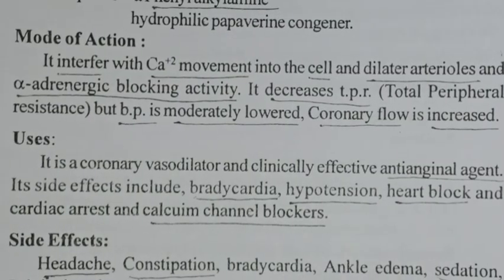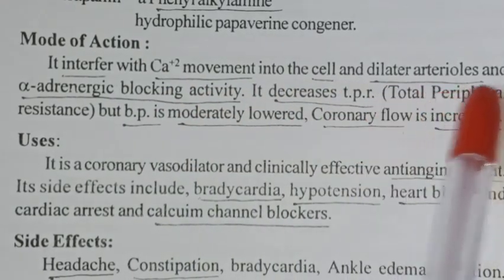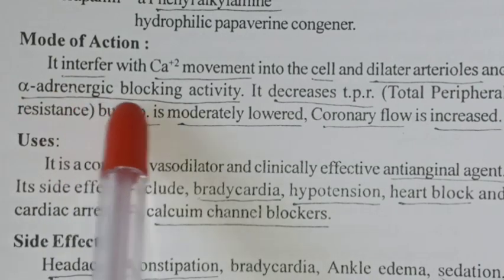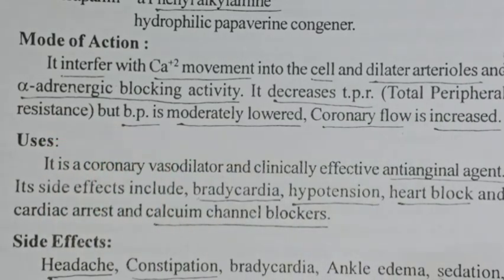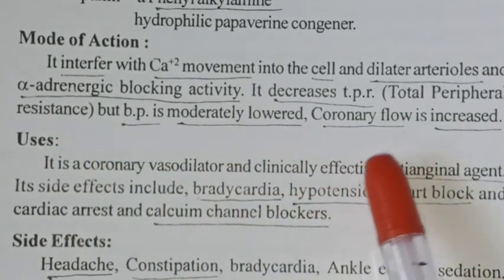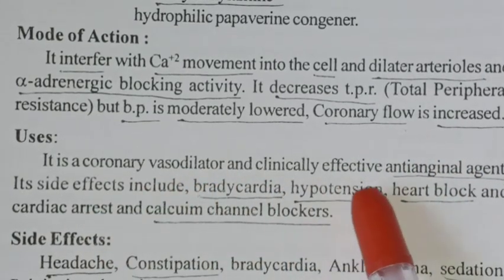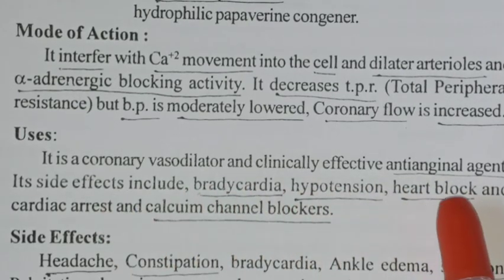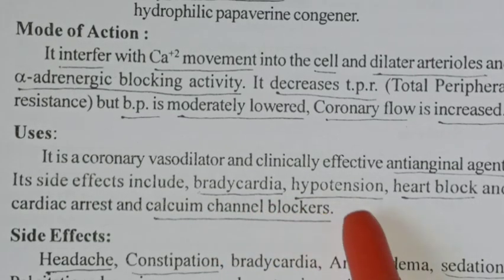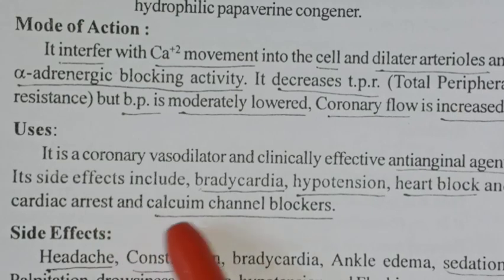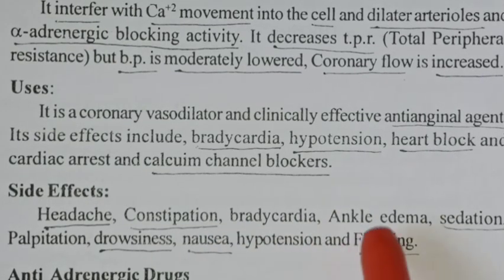Regarding mode of action, verapamil interferes with calcium ion movement into the blood vessels and has alpha-adrenergic blocker activity. It decreases total peripheral resistance and coronary flow is increased. It is used as a coronary vasodilator and clinically effective anti-anginal agent. Side effects include bradycardia, hypotension, heart block, and cardiac arrest. General calcium channel blocker side effects include headache, constipation, and nausea.